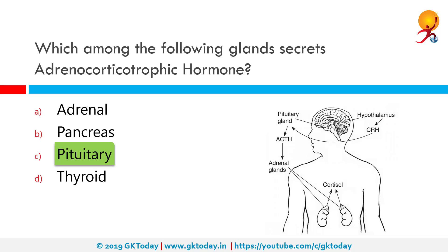The posterior part releases two hormones produced in the hypothalamus: oxytocin and antidiuretic hormone or ADH, also known as vasopressin.